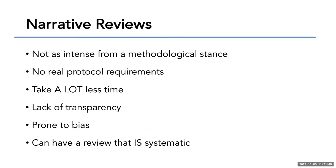Narrative reviews are not as intense from a methodological stance. There are no real protocol requirements and they take a lot less time, but they also have a lack of transparency — you don't know where the person searched, how they searched, or what were their inclusion and exclusion criteria, so they're prone to bias. But what I tell students when I tell them they can't do a systematic review is that you can have a narrative review that is systematic: you can be explicit with where you're searching, how you're searching, and include inclusion and exclusion criteria. I'm seeing more and more narrative reviews like this — they still are not systematic reviews, but they're a narrative review that is more systematic.